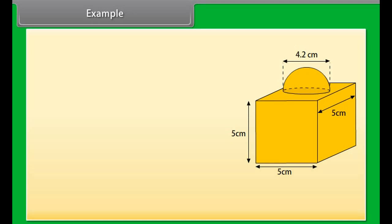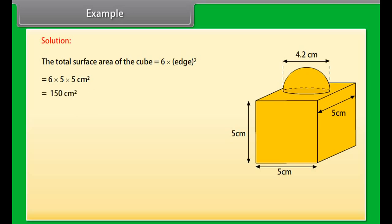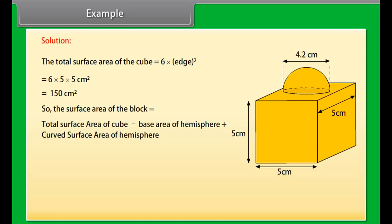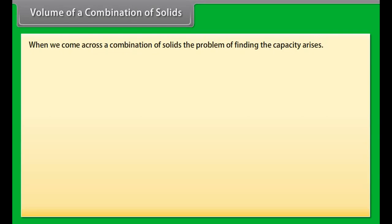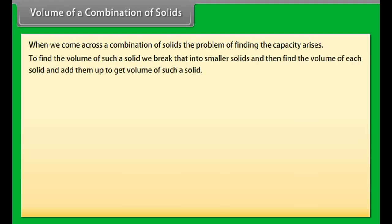Look at this figure. This decorative block is made of two solids — a cube and a hemisphere. The base is a cube with edge 5 cm, and the hemisphere fixed on top has a diameter of 4.2 cm. Find the total surface area of the block. The total surface area of the cube = 6 × edge² = 6 × 5 × 5 = 150 cm². Since the area where the hemisphere is attached is excluded, the surface area of the block = total surface area of cube − base area of hemisphere + curved surface area of hemisphere = 163.86 cm².